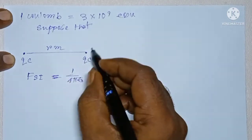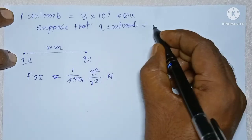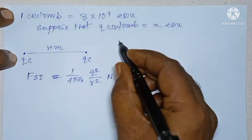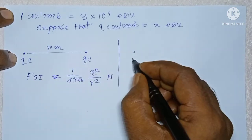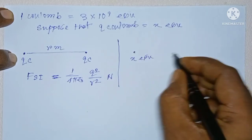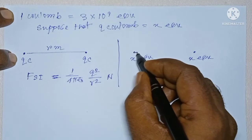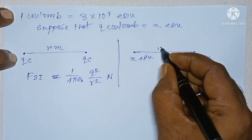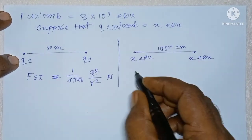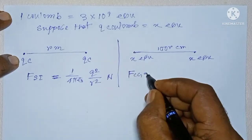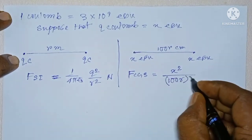Suppose that Q coulomb equals to X ESU. So, this diagram can alternatively be written as instead of Q coulomb we are writing here X ESU. The other charge is also X ESU. And the separation in between them is R meter that means 100 R centimeter. So, the force between these two point charges in CGS unit system is F CGS equals to X square upon 100 R whole square dyne.